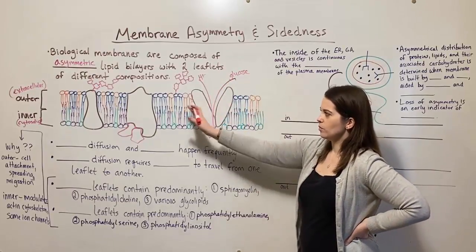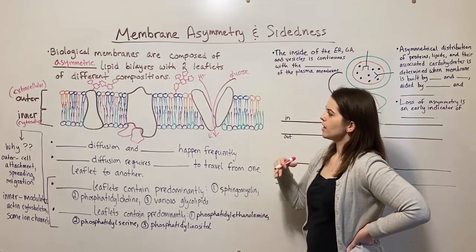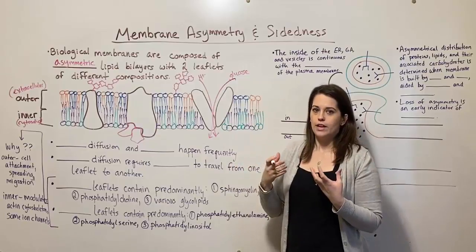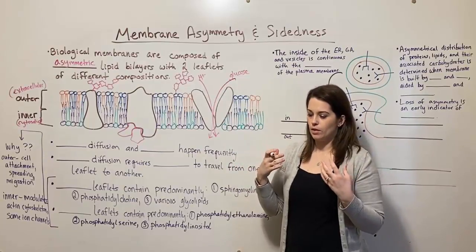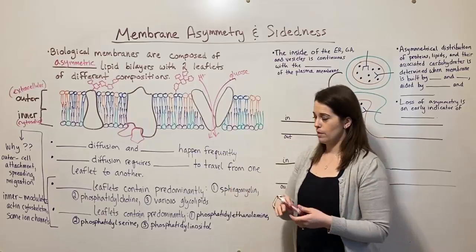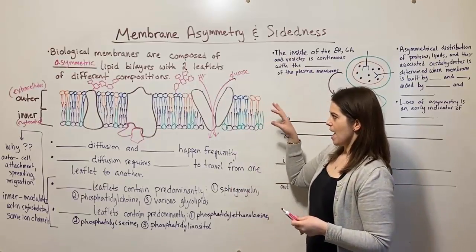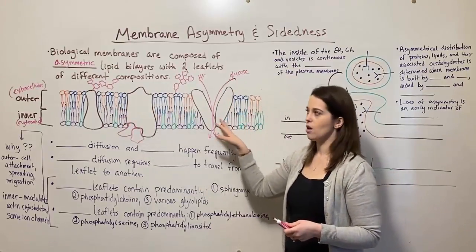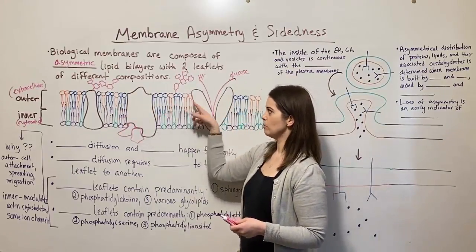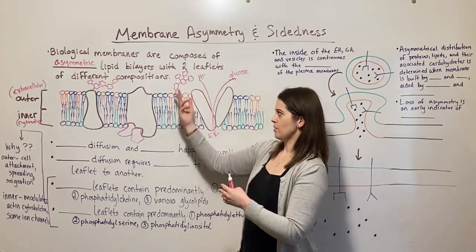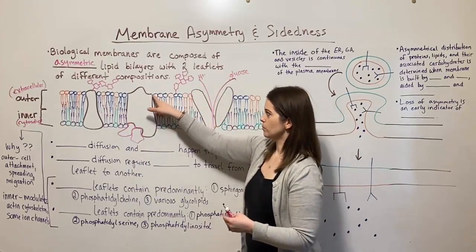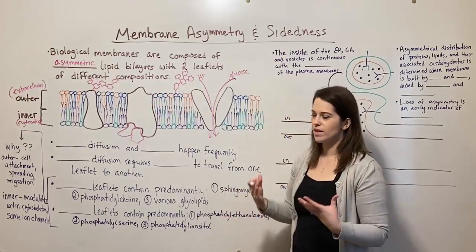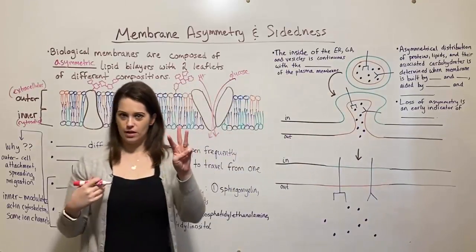Now let's talk about how dynamic this is. When we talk about the plasma membrane and biological membranes in general, you often hear them referred to as fluid mosaics — so the fluid mosaic model is maybe something you've heard of before. The fluidity means that these things are very dynamic. You can have things moving around in the membrane; these phospholipids are moving with respect to each other. So we're going to talk about three different kinds of movement.